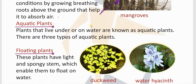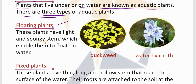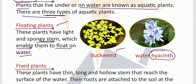Coming to aquatic plants — plants which are present in water, called aquatic plants. Plants that live under or on water are known as aquatic plants. These are divided into three types. First, floating plants: these plants have a light and spongy stem which enables them to float on water. Examples are duckweed and water hyacinth.